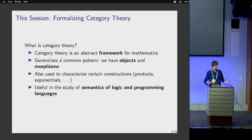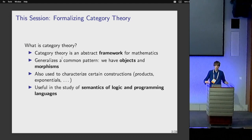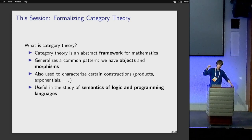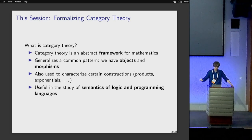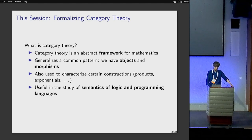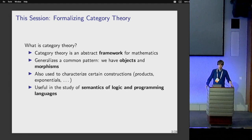If you look at mathematics — all kinds of variations of mathematics that you might do — there is a very common shared pattern: what you're doing often involves some kind of objects and morphisms, like functions between them. For example, you might look at sets and functions between them, or groups and homomorphisms, or sets and relations. Each of these examples is captured by the notion of a category.